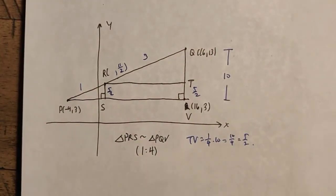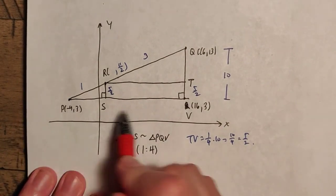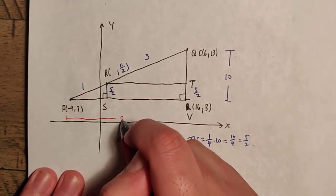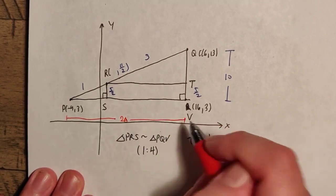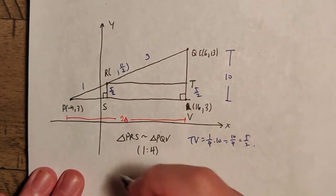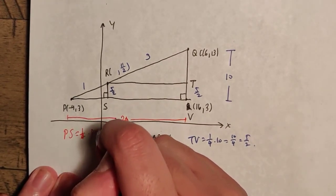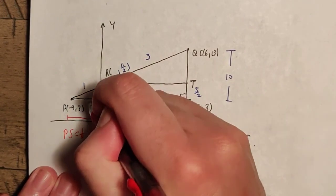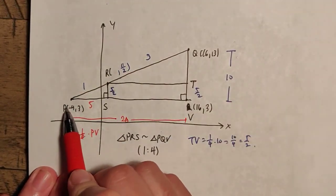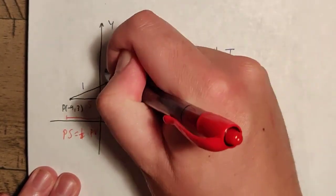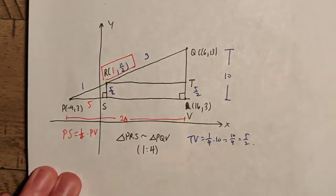Now for a similar thing, we can do this for the x coordinate. We know PV here goes from negative 4 to positive 16. So this entire thing has a length of 20. And again, we have that 1 to 4 ratio. So it makes sense that PS is a quarter of PV, and PV is 20. So therefore, this is 5, and then we can add 5 to this. So we go from negative 4, we go 5 to the right, and that yields just the 1 we want. So R is going to be at the point 1 comma 11 over 2, and that matches what we found here.